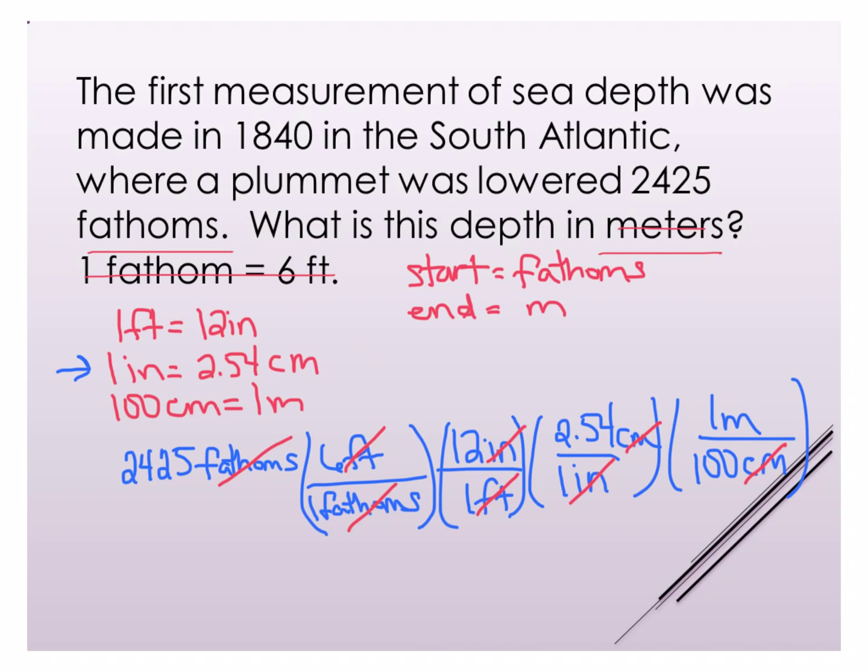So now I can go back to my calculator and say 2425 times 6 times 12 times 2.54 divided by 100 equals 4435 meters and I've rounded this to four significant digits because my original value had four sig figs and all of these parts here all of these relationships or conversion factors are all exact numbers so I don't have to take those into account when I'm determining the correct number of significant figures for an answer.